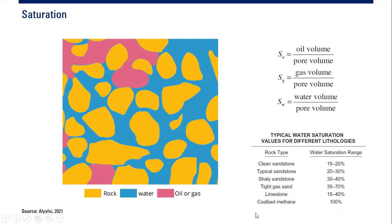The rest is coal bed gas. Limestone is 15 to 40 percent, quite heterogeneous. These are the typical water saturation values for different lithologies.